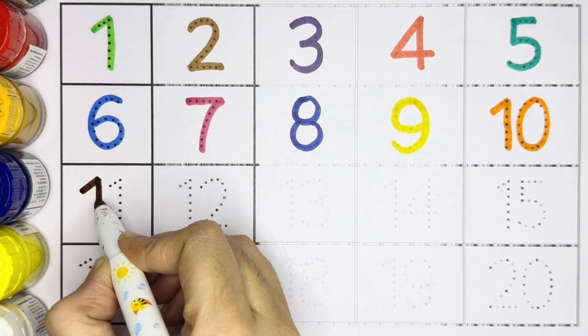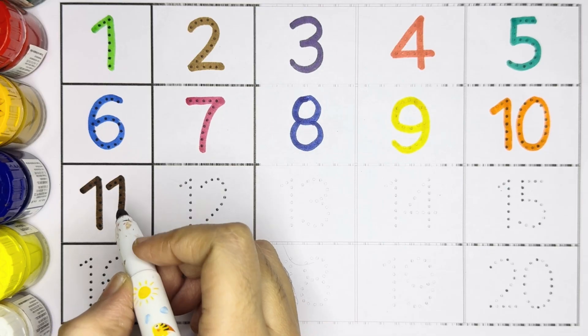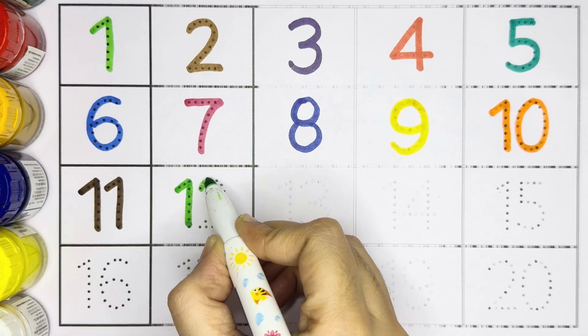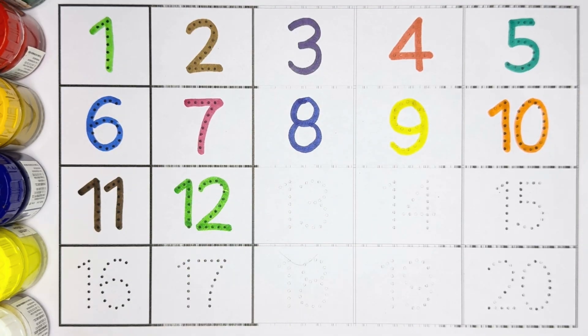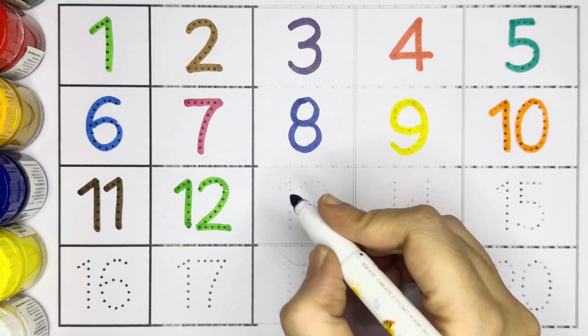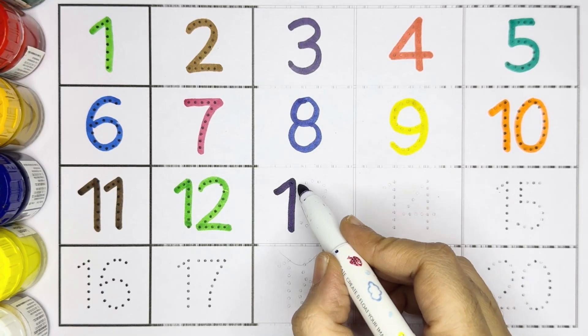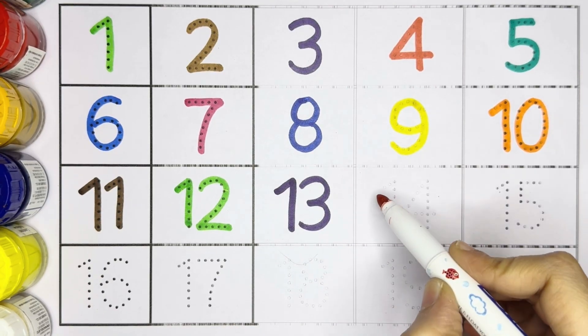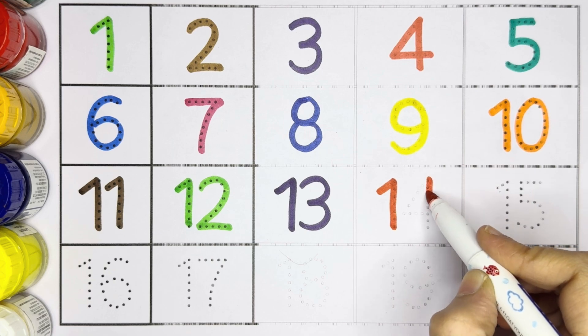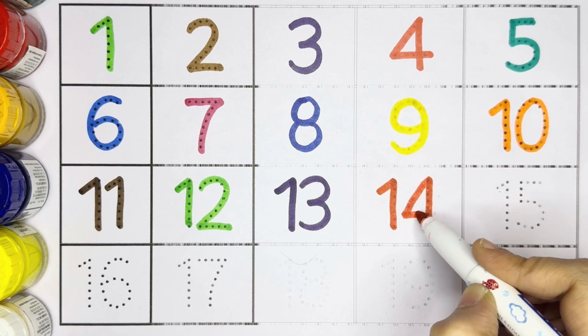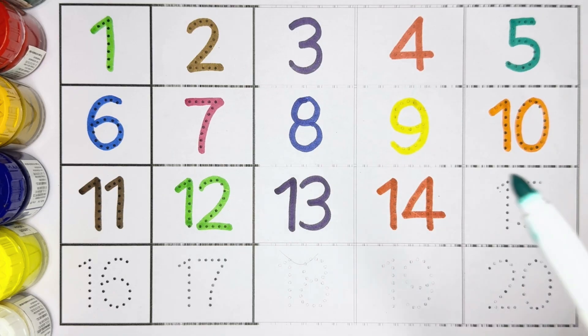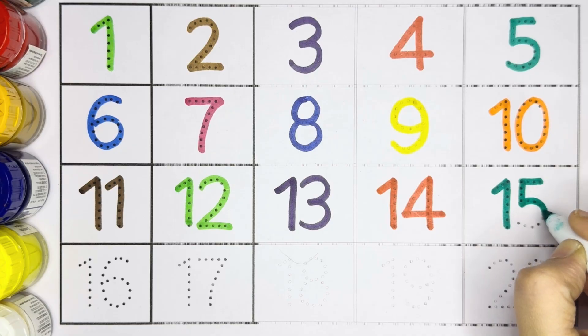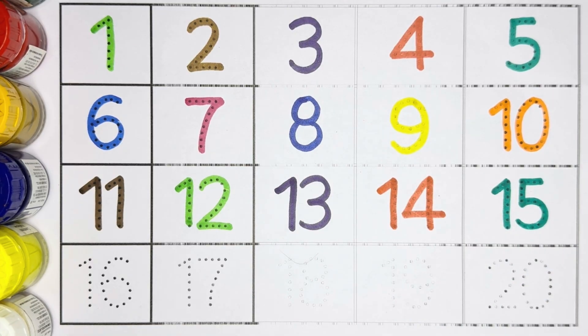Next is number 11, 1, 1, 11, violet color. 1, 2, 12. 1, 3, 13. Number 13, 1, 4, 14. Number 14, 1, 5, 15. Number 15.